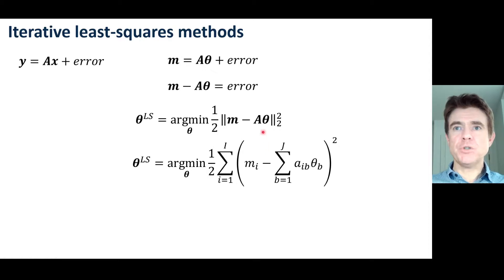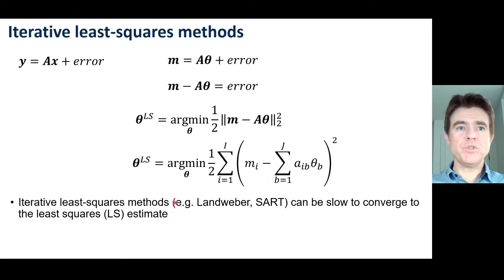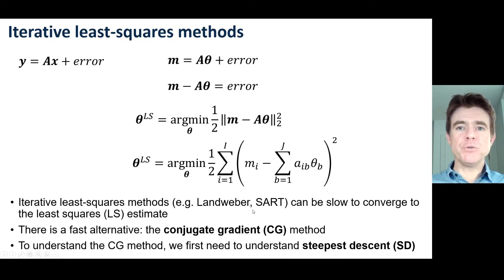In subscript notation, matrix-vector multiplication is written accordingly and the vector M appears there. There are iterative methods that are quite simple to use, like the Landweber method or the Simultaneous Algebraic Reconstruction Technique (SART). Those methods can be slow to converge to the least squares estimate. The faster method is known as conjugate gradient, but in order to understand conjugate gradient we first need to understand steepest descent, which is the topic of this video.